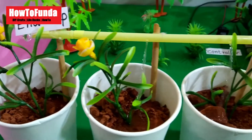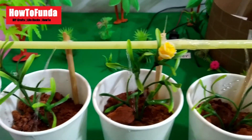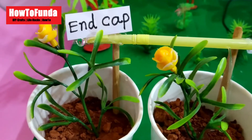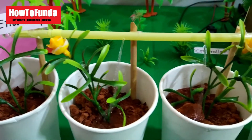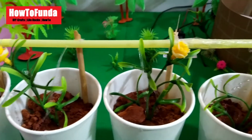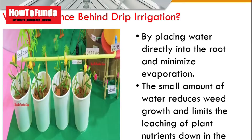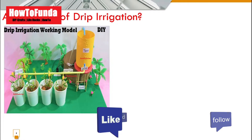In drip irrigation, soil nutrients also get saved. The water goes directly to the roots, which avoids or minimizes evaporation because the water flows in small amounts. This also reduces weed growth and limits the leaching of plant nutrition down into the soil.